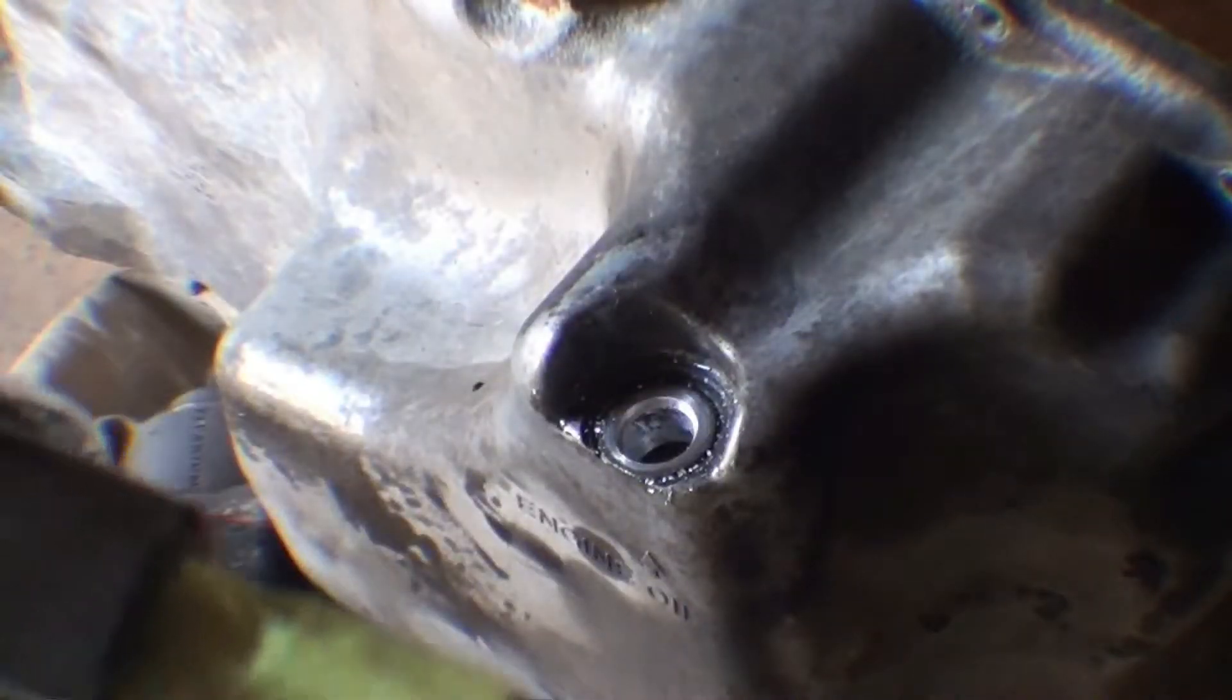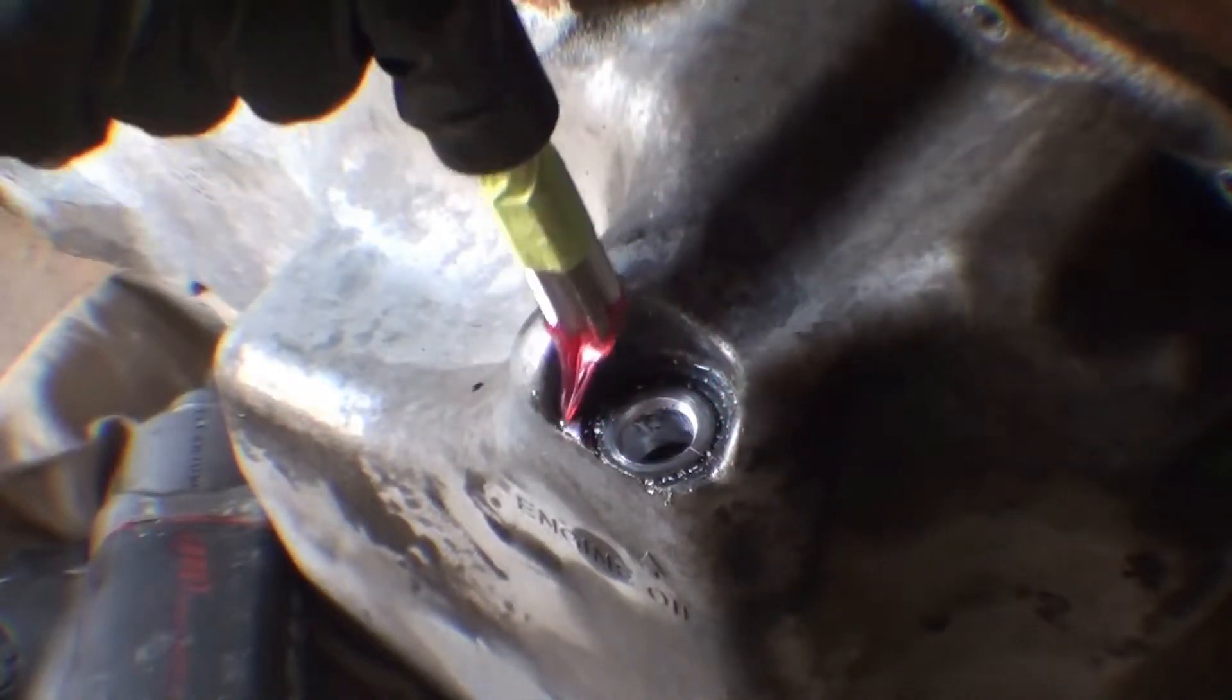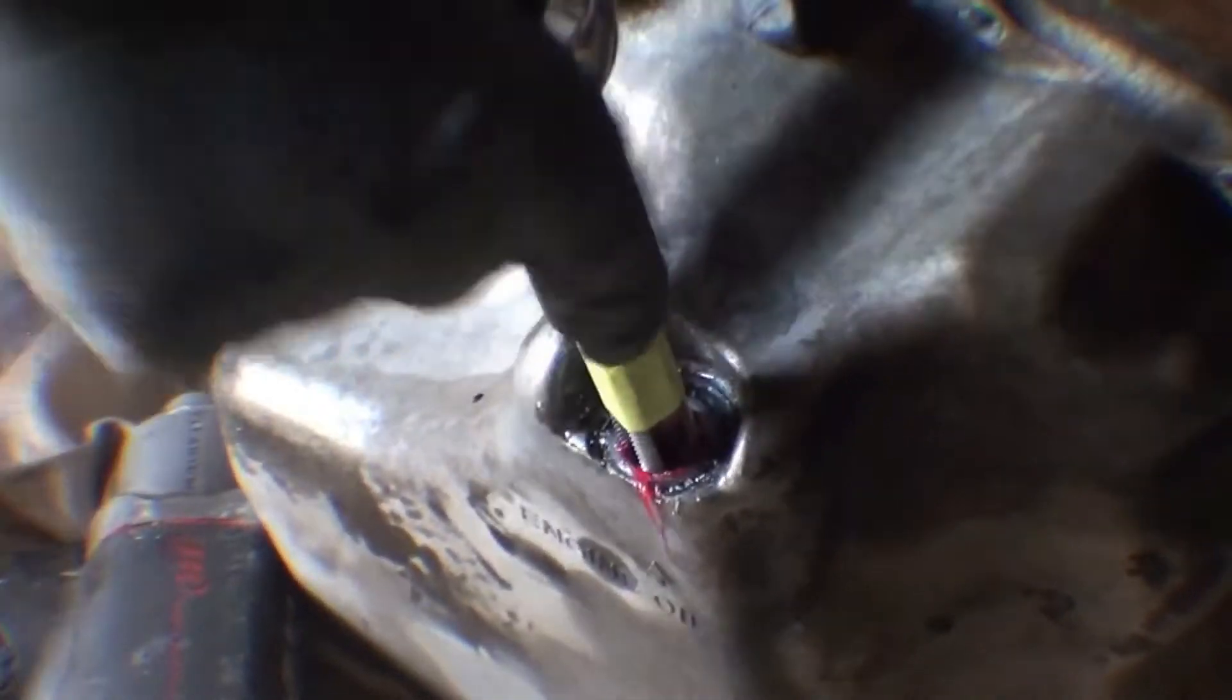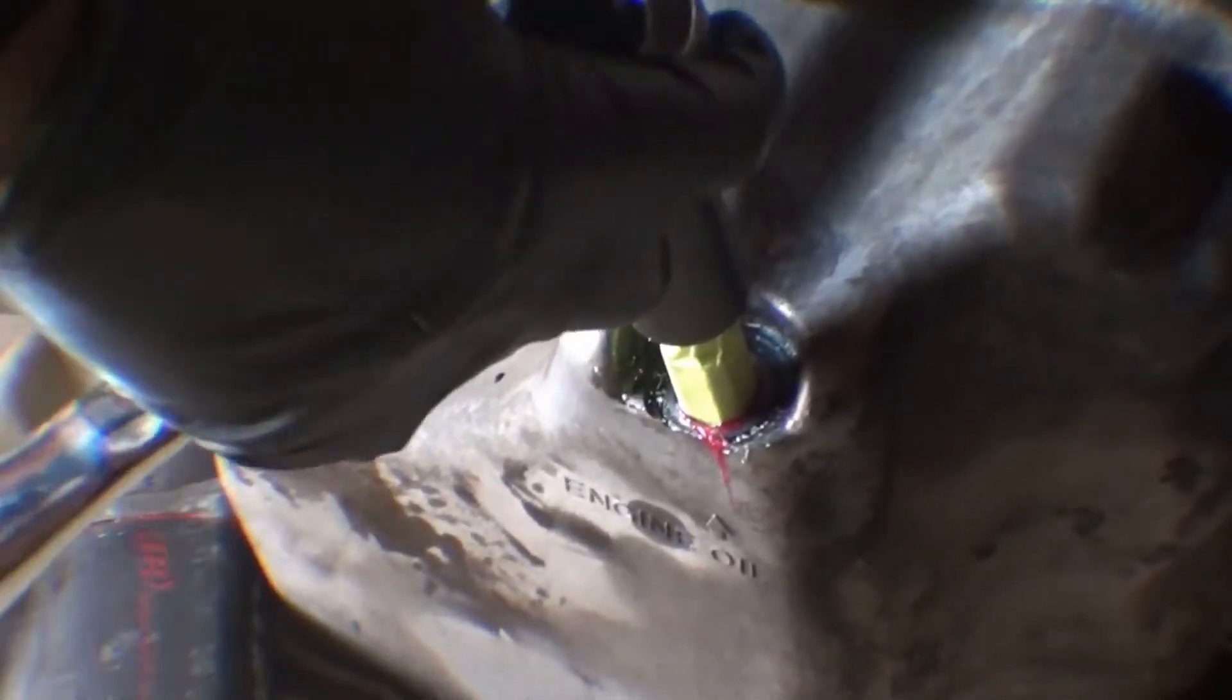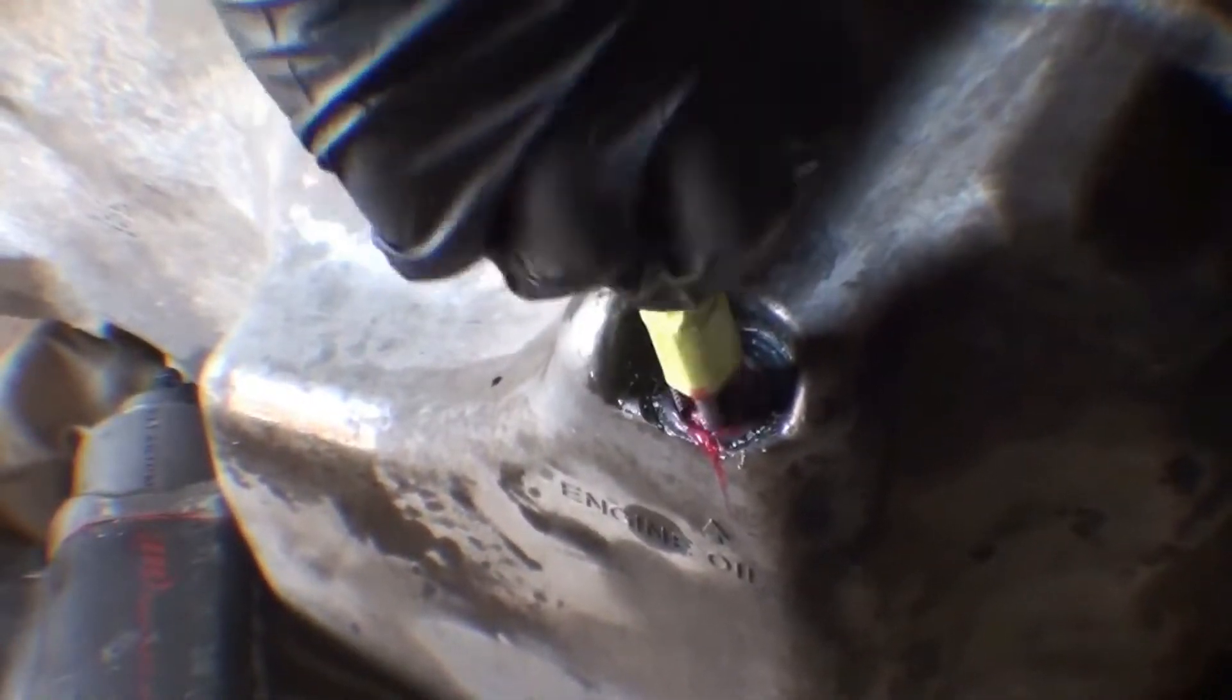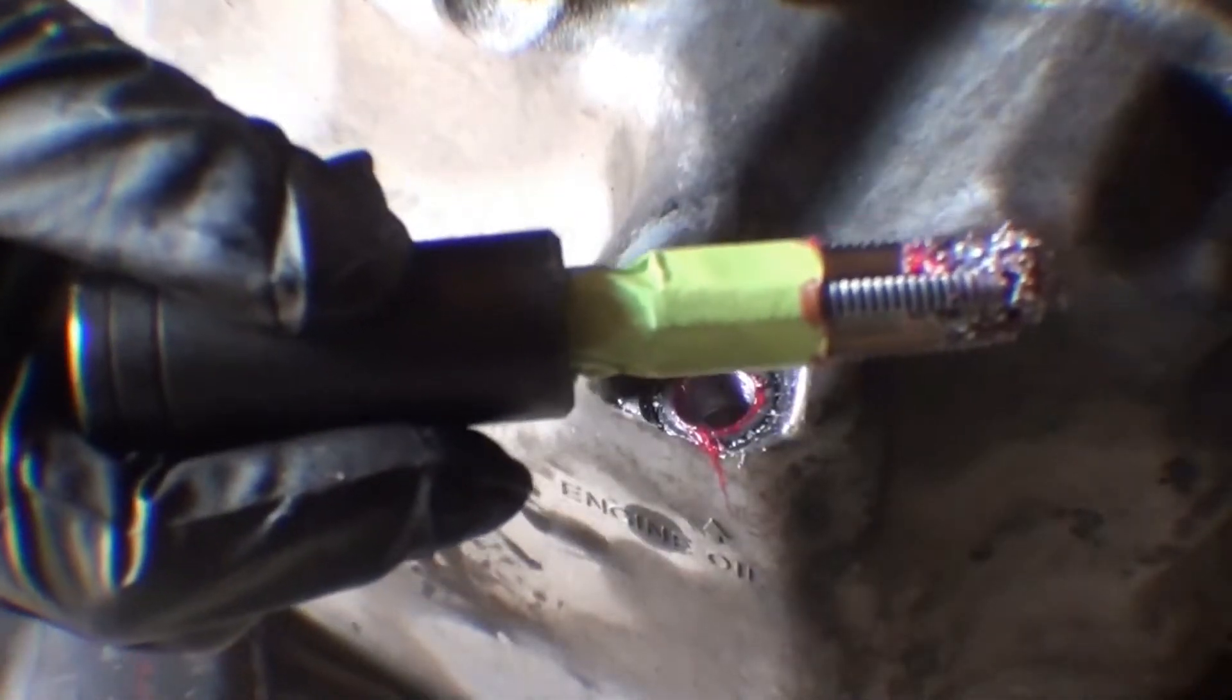Lube the supplied tap with grease and tap new threads. When done tapping, use brake clean and a rag to clean off grease on the new threads and the surrounding area.